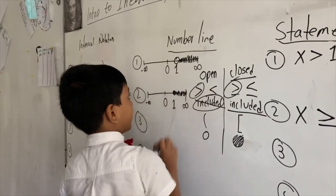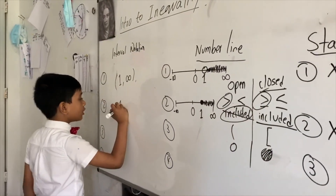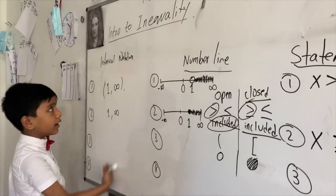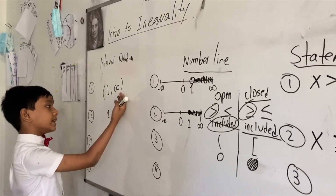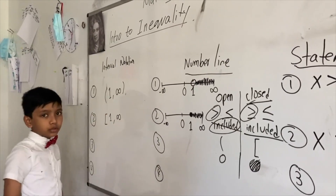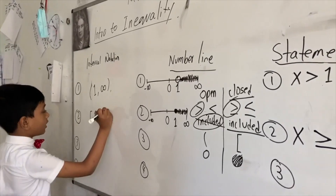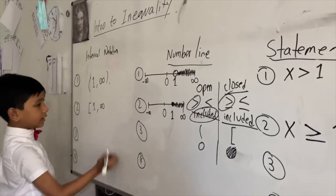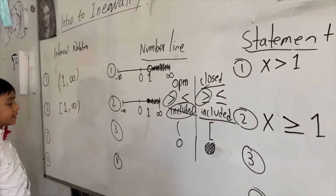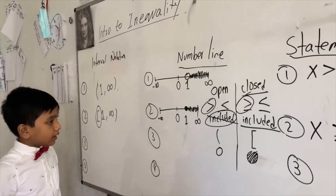X lies somewhere around here on the number line. So how we can write this is still one comma infinity. Now, to differentiate this interval notation from the open circle version, you must put a square bracket in front of the number with the closed circle on it. So this one needs a square bracket before it.